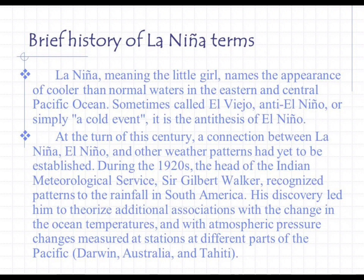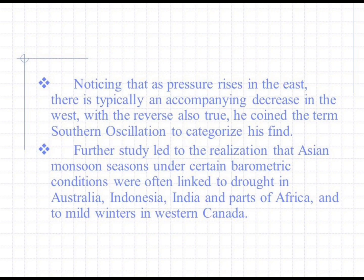During the 1920s, the head of the Indian Meteorological Service, Sir Gilbert Walker, recognized patterns in the rainfall in South America. His discovery led him to theorize additional associations with changes in ocean temperatures and atmospheric pressure changes measured at stations in different parts of the Pacific — Darwin, Australia and Tahiti. Noticing that as pressure rises in the east there is typically an accompanying decrease in the west, he coined the term 'Southern Oscillation.' Further study linked Asian monsoon seasons under certain barometric conditions to drought in Australia, Indonesia, India, and parts of Africa, and to mild winters in western Canada.